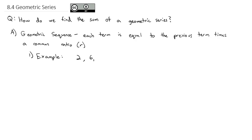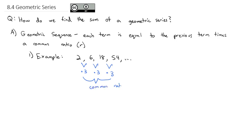An example of a geometric sequence would be 2, 6, 18, 54, and so on. You can see to go from 2 to 6, we multiplied by 3; from 6 to 18, we multiplied by 3; from 18 to 54, we multiplied by 3. That multiplied by 3 is our common ratio, or r.